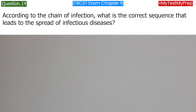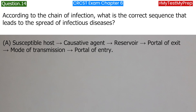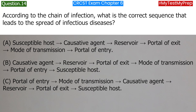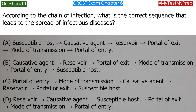According to the chain of infection, what is the correct sequence that leads to the spread of infectious diseases? A. Susceptible host, causative agent, reservoir, portal of exit, mode of transmission, portal of entry. B. Causative agent, reservoir, portal of exit, mode of transmission, portal of entry, susceptible host. C. Portal of entry, mode of transmission, causative agent, reservoir, portal of exit, susceptible host. D. Reservoir, causative agent, susceptible host, portal of exit, mode of transmission, portal of entry. Answer: B. Causative agent, reservoir, portal of exit, mode of transmission, portal of entry, susceptible host.